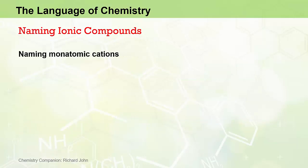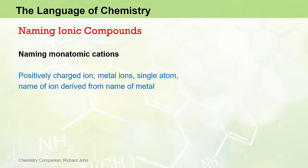We'll start with the cations first, and specifically the naming of monatomic cations. Cations are positively charged ions, typically derived from metals, which we call metal ions. The monatomic aspect means that there is a single atom involved, and the name of the ion is derived directly from the name of the metal.